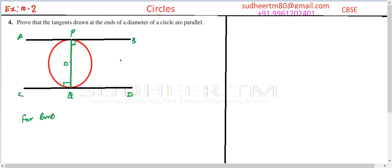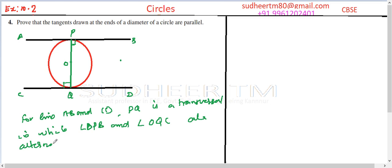Now for the lines AB and CD, PQ is a transversal in which angle OPB and angle OQC are alternate interior angles.